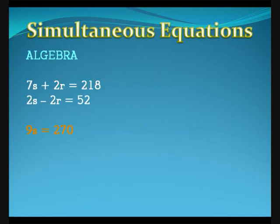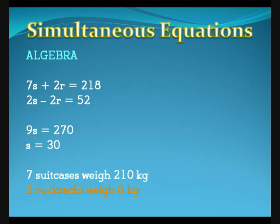Adding, we get 9s equals 270, so s equals 30. Hence seven suitcases weigh 210, and two rucksacks weigh 8 kilograms. So one rucksack weighs 4 kilograms.